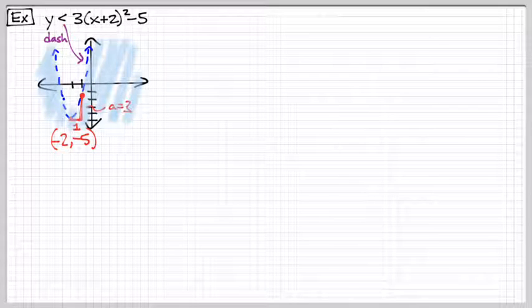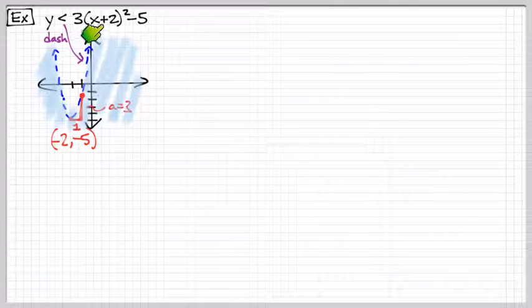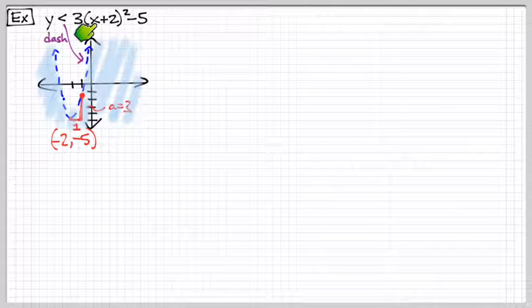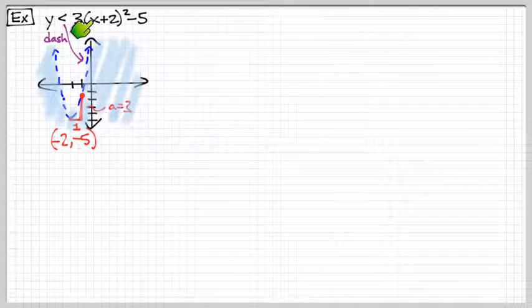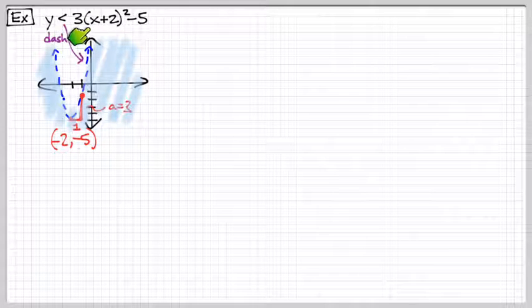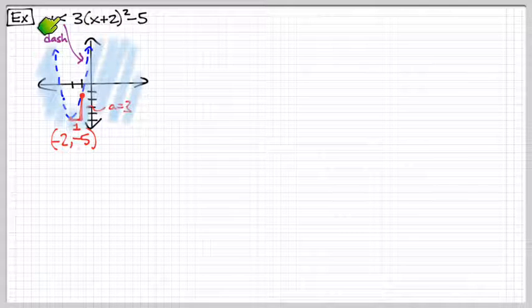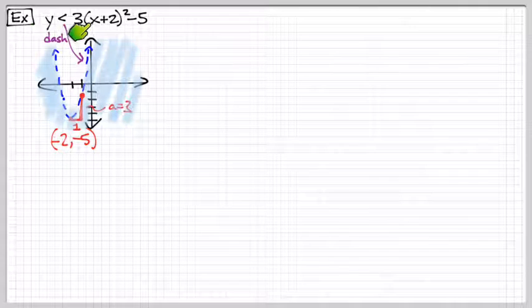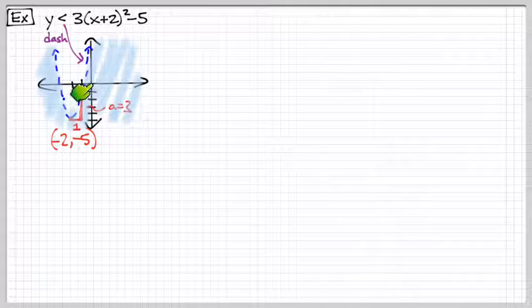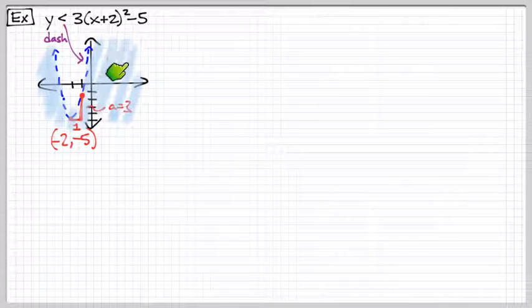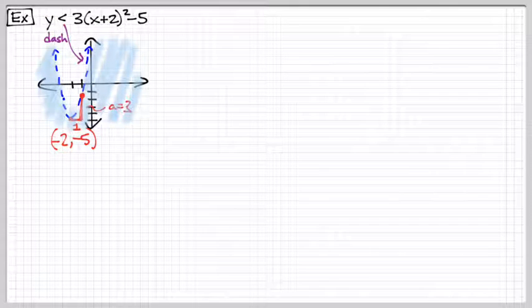Now, notice this. We could also have taken a test point, 0, 0. And let's kind of just do a thought experiment here. Let's plug 0 in here. So, 3 times 2 squared. So, 3 times 4 is 12. 12 minus 5 is 7. Is 7 greater than 0 when we plug in 0, 0? Yes, 7 is greater than 0. So, 0, 0 is a solution point. And so, yes, everything on this side of the parabola is a solution to this expression here.